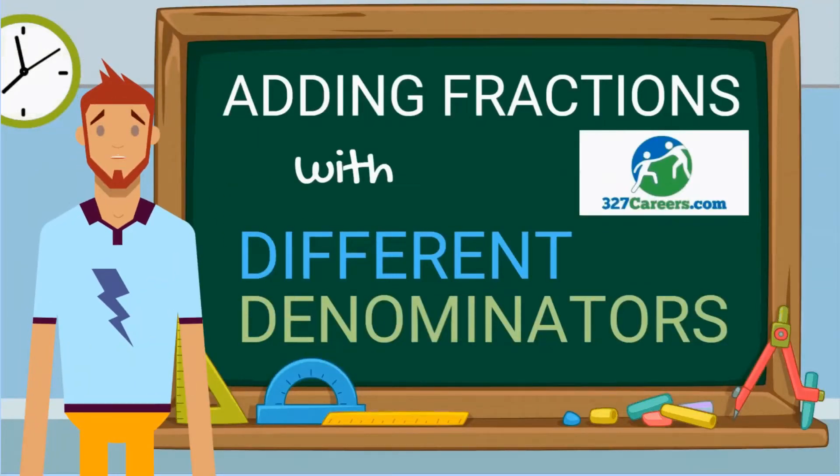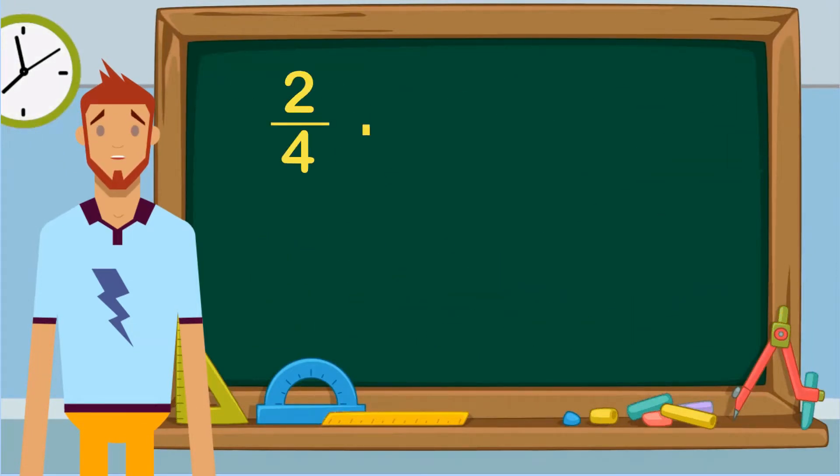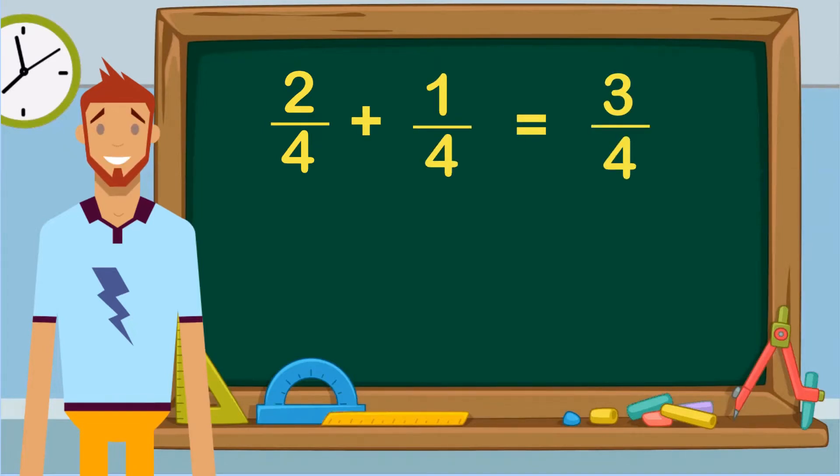Hi there, my name is Tom. Today we will be talking about adding fractions with different denominators. Adding fractions with common denominators is easy. We simply add the numerators while using the same denominator. But what if we have different denominators?